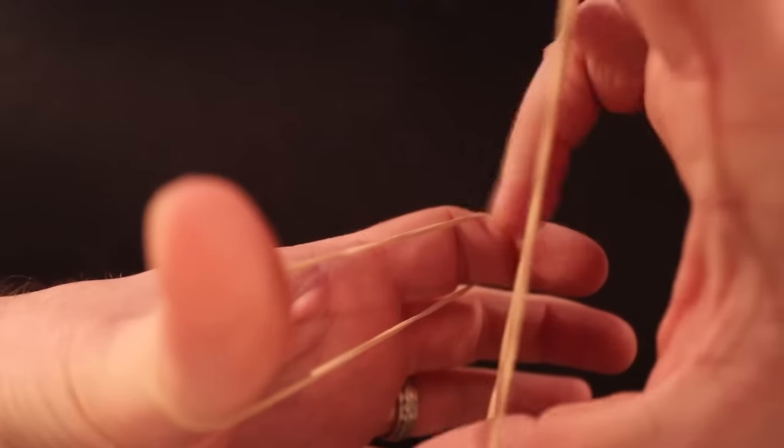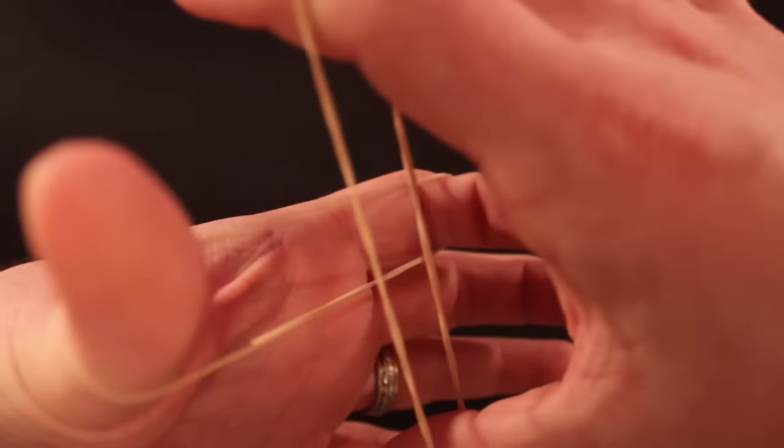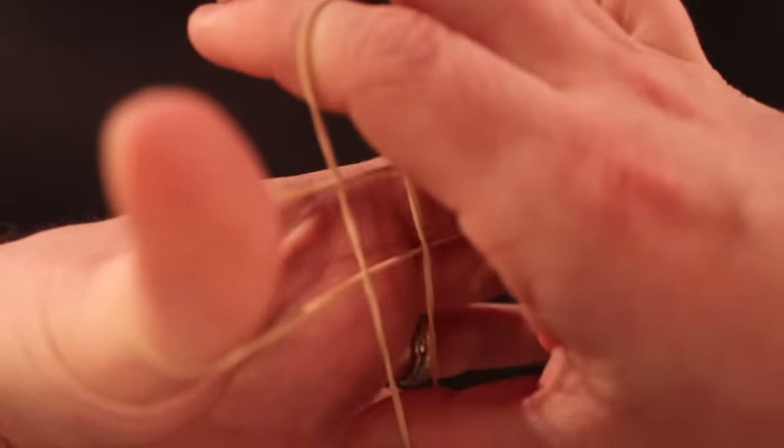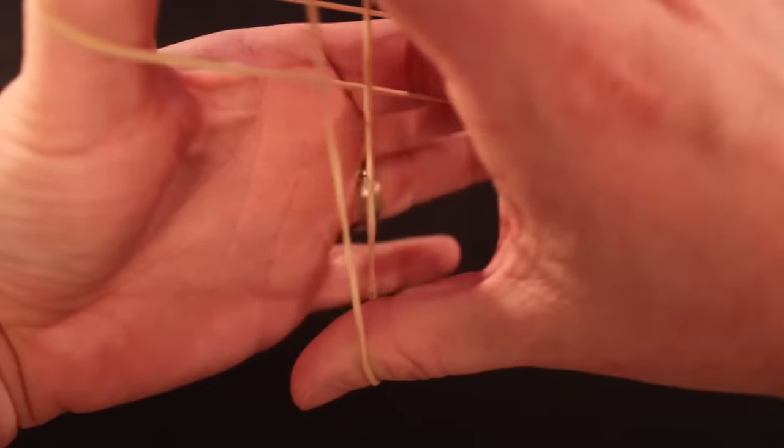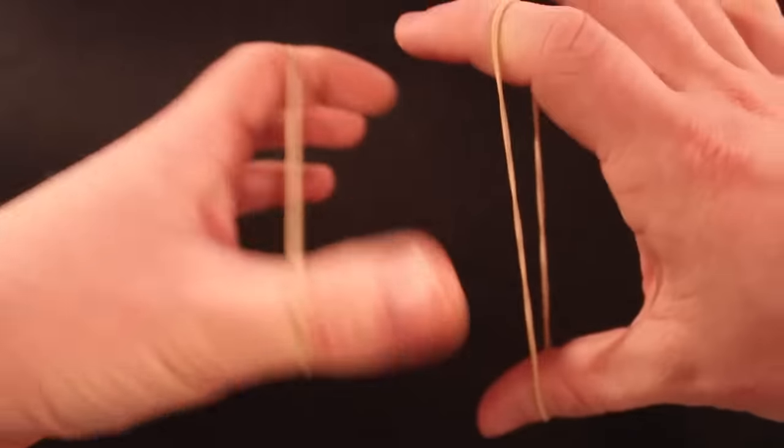Some people like to stay here and then they use their ring finger and they pop the rubber band so it looks like it came through. I don't like that as much. I like to rub slowly and come off all the way down to like one string and then pull right through.